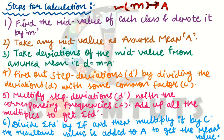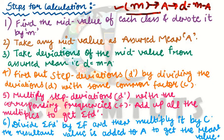After calculating mid values, you take one of those mid values as the assumed mean. I also gave you a formula to find assumed mean: (minimum value + maximum value) ÷ 2. Otherwise simply take the middle value of the series as the assumed mean. After finding the assumed mean, the next step is to calculate deviations. The formula for deviation is d = m − a.